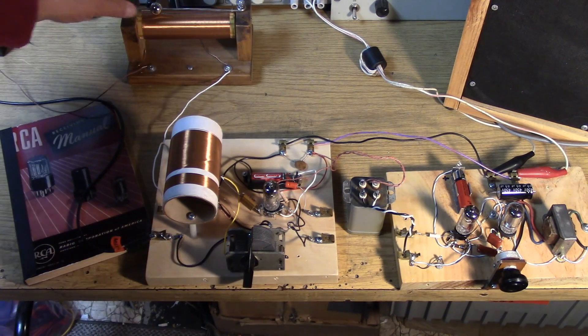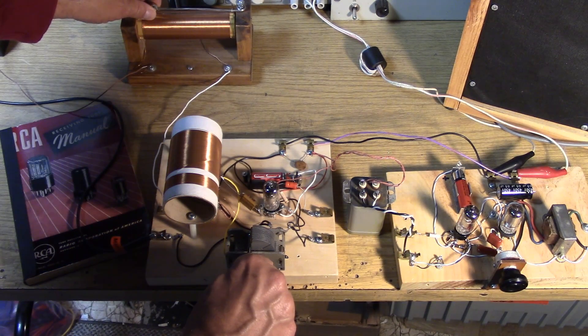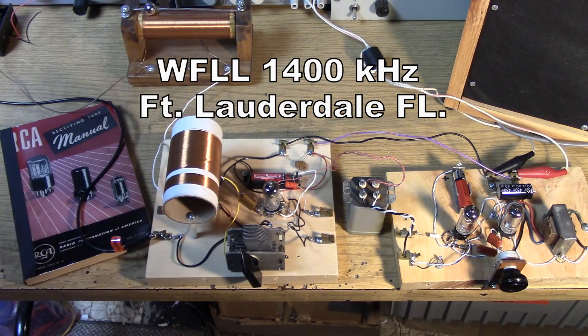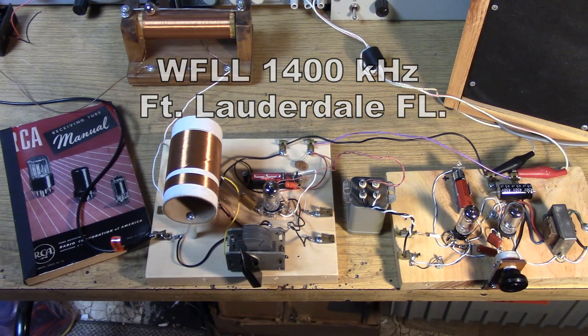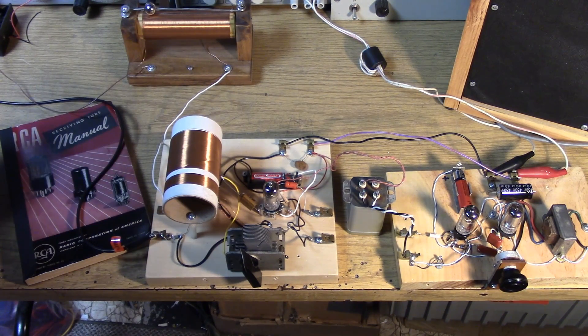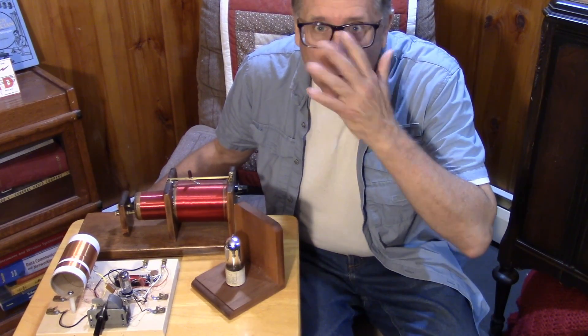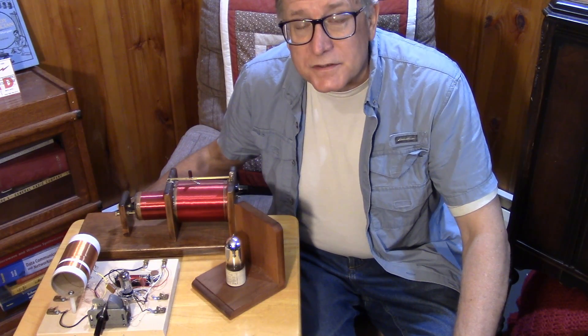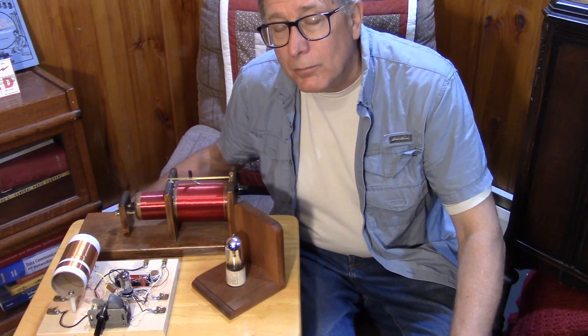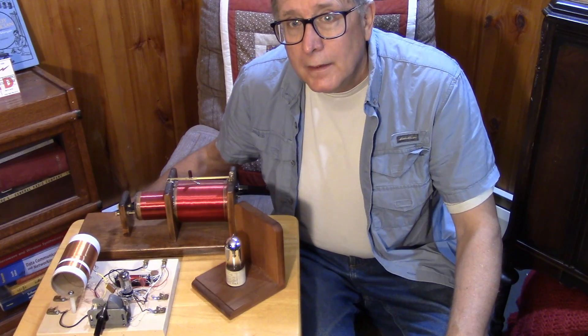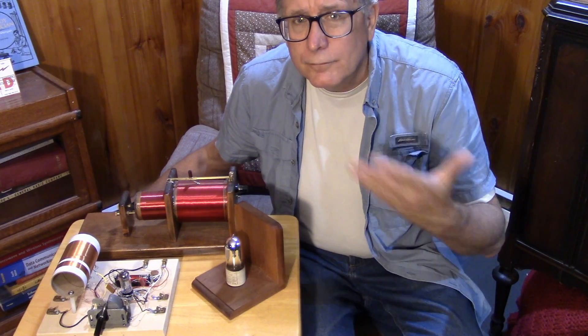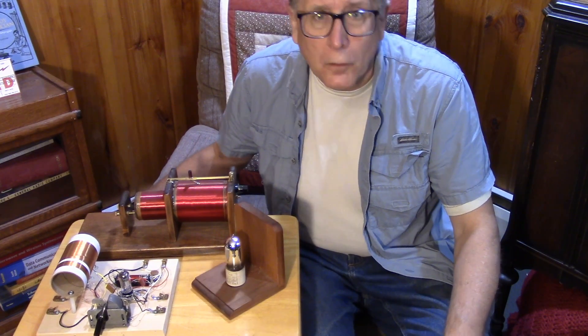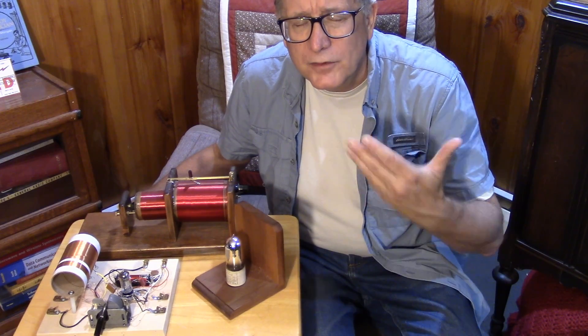In the very early 1900s, the aughts, the crystal set of course reigns supreme. The biased detector is the way that most people are going at this time, and that goes right up through into the teens and so on. Crystal sets continue to be used, especially at the long waves with damped waves like buzzing type signals.